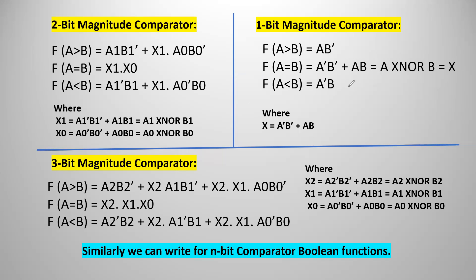Here you can see the complete boolean expressions for 1-bit and 2-bit magnitude comparators, and easily we can extend to 3-bit. For 1-bit: f(a > b) = a·b'; f(a = b) = a XNOR b, assigned as variable x; f(a < b) = a'·b, where x = a'b' + ab. For 2-bit: f(a > b) = a1·b1' + (a1 XNOR b1)·a0·b0' — meaning if a1=1 and b1=0, directly a is greater, or if MSB bits are equal and LSB satisfies a0·b0'.